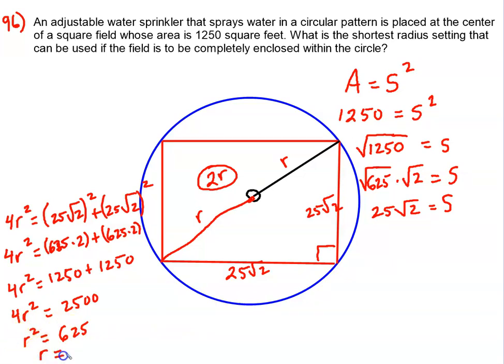That's going to be 25. So that gets us to our final answer: the shortest radius setting that can be used if we're going to enclose the entire field is 25 feet. That is the conclusion to this problem. I hope that helps, and if you have any questions, let me know.